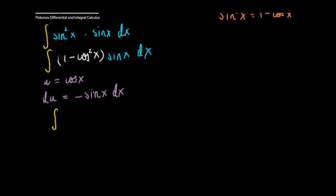This becomes the integral of 1 minus cosine squared, which is nothing but u squared. And sine of x dx is minus du, so I can bring that negative out times du.